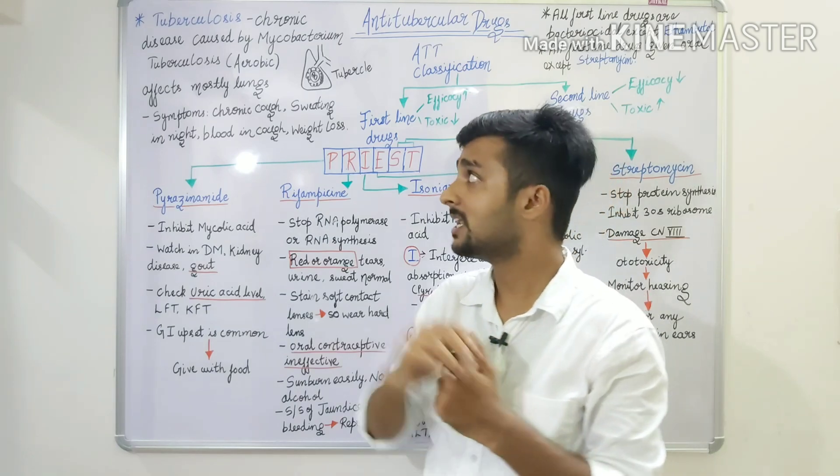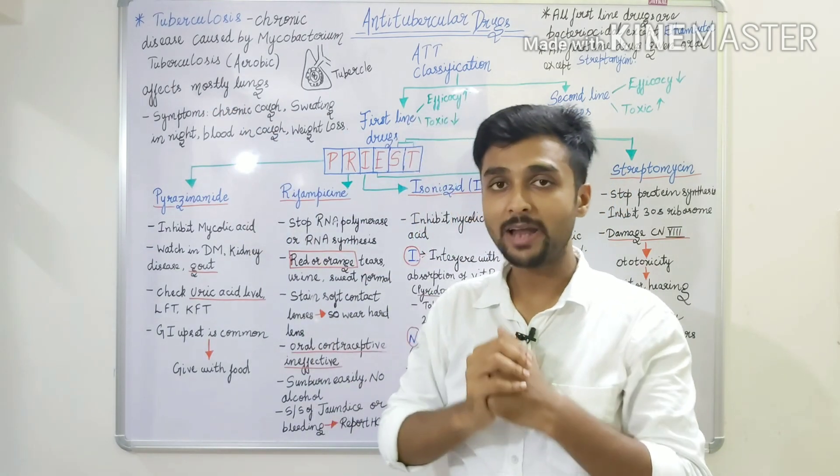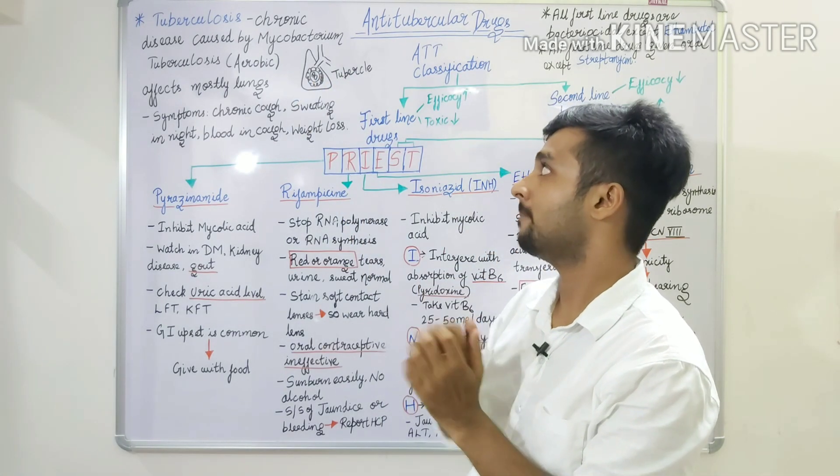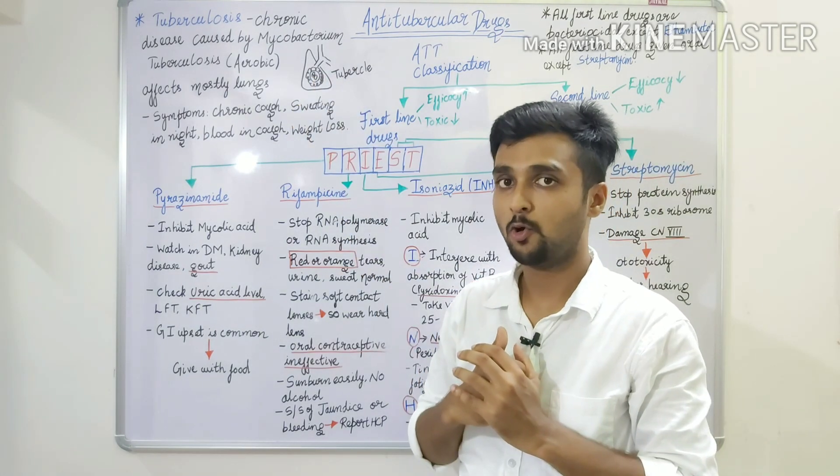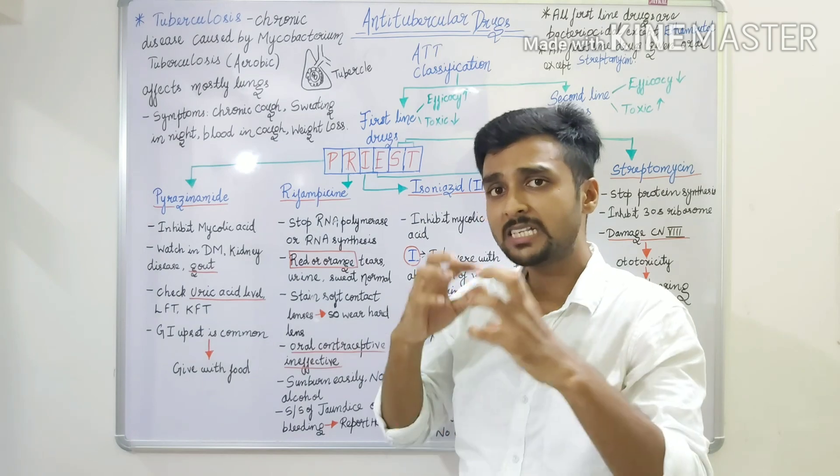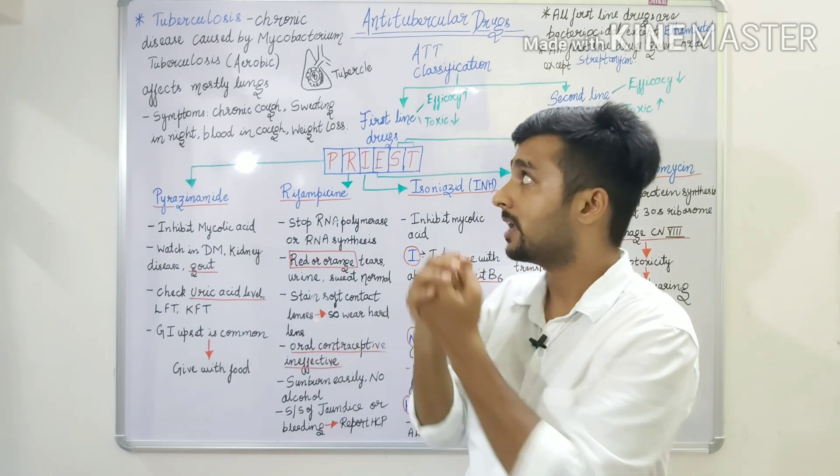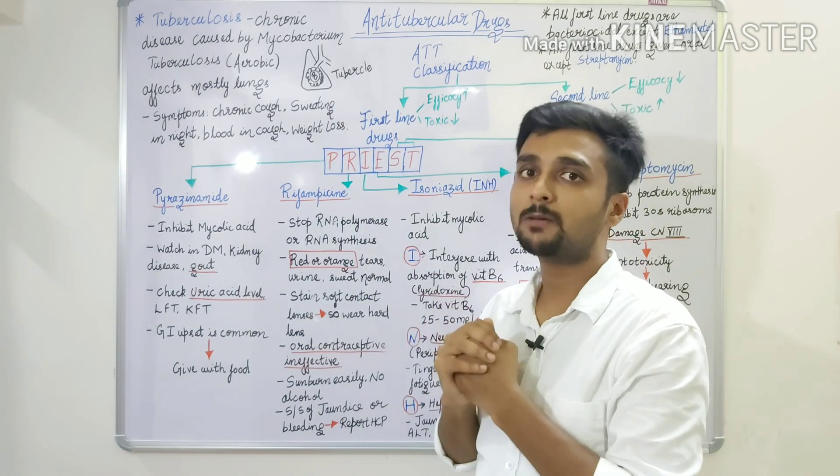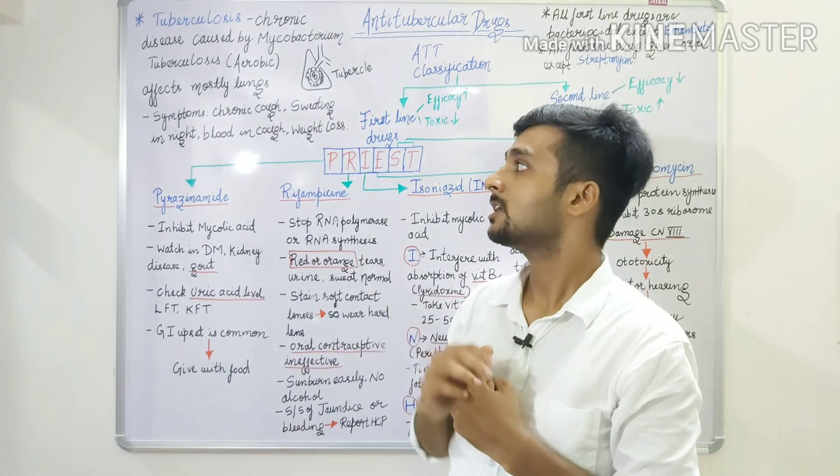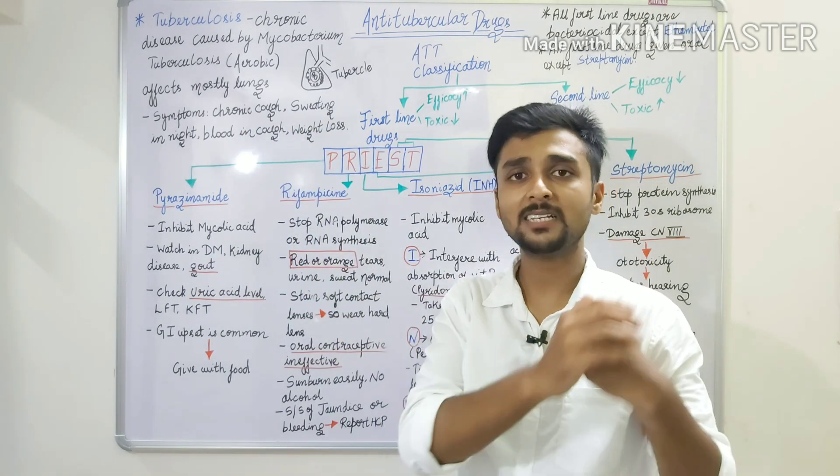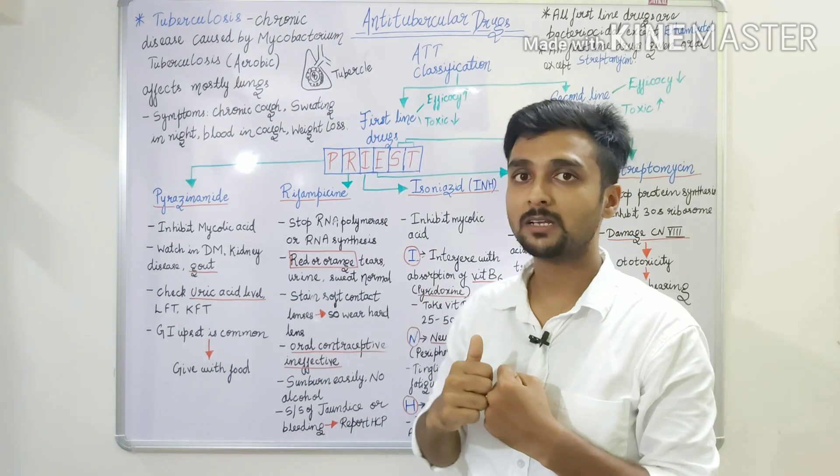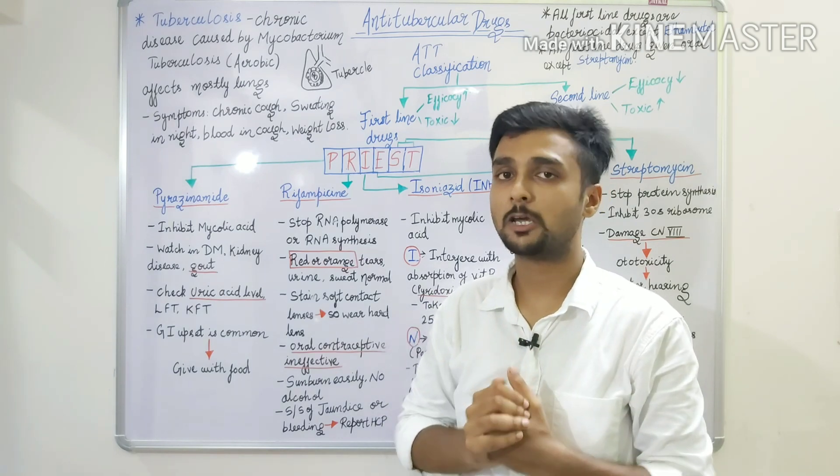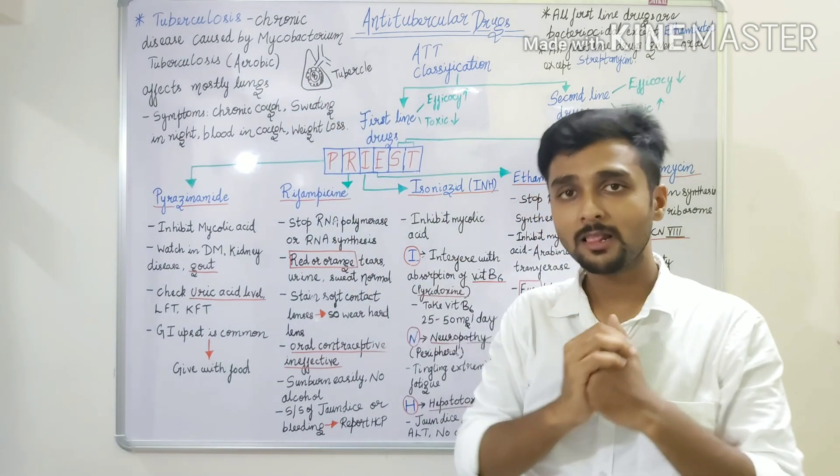In our lungs, this bacteria comes into the lung parenchymal tissue. We are depositing the bacteria here and in the surrounding of those bacteria, various inflammatory cells are deposited. And they become a structure within our lungs, that is tuberculosis. And this can cause different symptoms like chronic cough, sweating at night, blood in cough, and in later stages, weight loss. This tuberculosis can be transmitted to various body parts, but mostly, it affects our lungs.